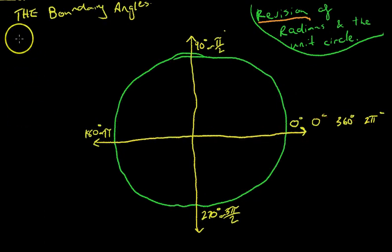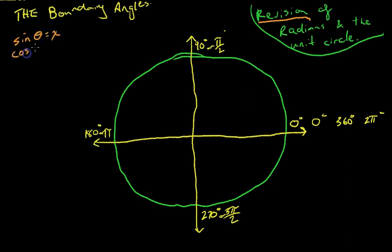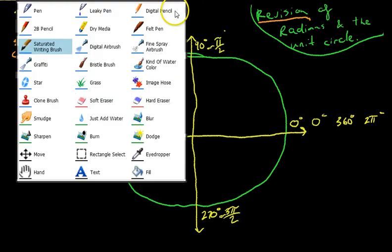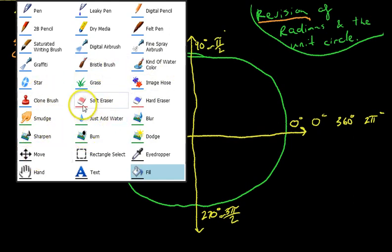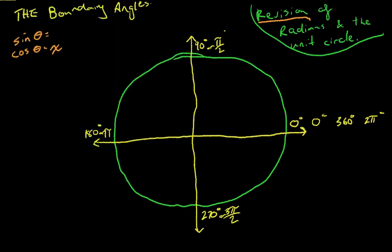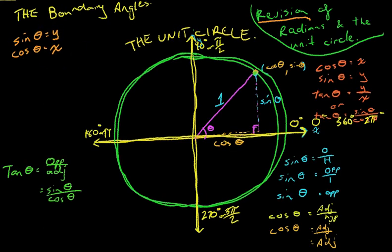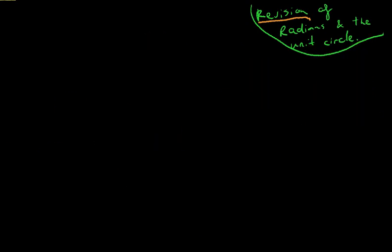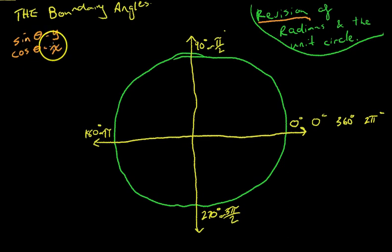Now, the unit circle exists on a Cartesian plane, which means that each of these points has coordinates. So: this point is coordinate (1, 0) — it has an x value of 1 and a y value of 0. This is coordinate (0, 1), meaning it has an x value of 0 and a y value of 1. This is coordinate (−1, 0). And the bottom point is coordinate (0, −1). Sin theta equals y and cos theta equals x.